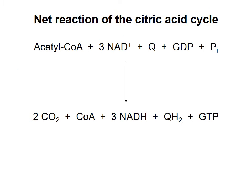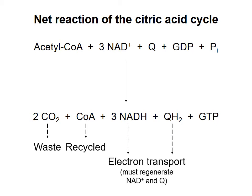The net reaction for the citric acid cycle is shown here. You do want to remember this reaction for the exam. Two carbons from acetyl-CoA are oxidized to CO2, which is a waste product. The free coenzyme A is recycled. And then the electrons from oxidation of carbon are put onto NAD+ and Q to make three NADH and a QH2. These are electron carriers that go on to give their electrons to the electron transport chain, as I'll talk about in the next topic.